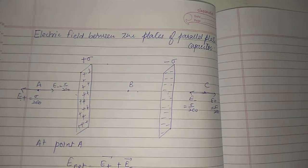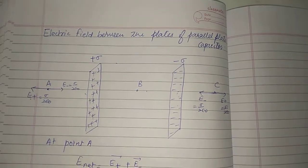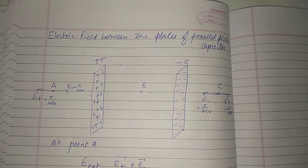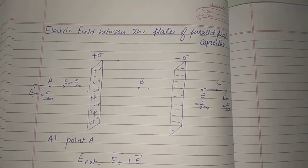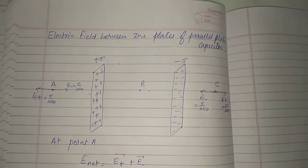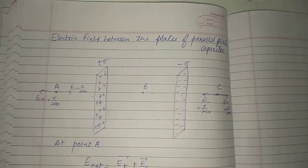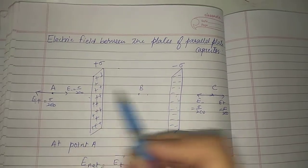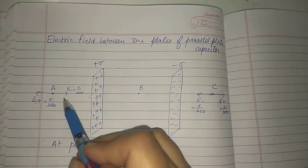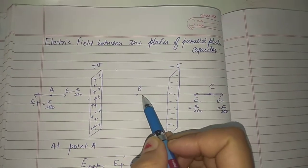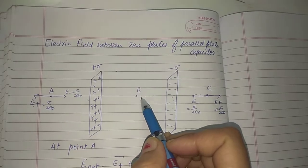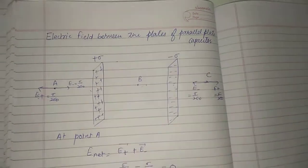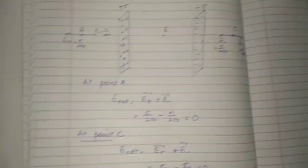We can conclude that when two parallel plates of a capacitor are placed this way, the electric field outside the plates is zero. Now let us come to point B, which lies between the two plates.